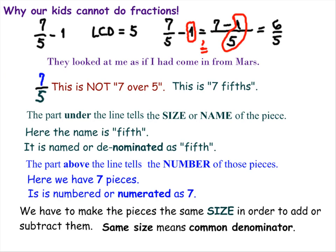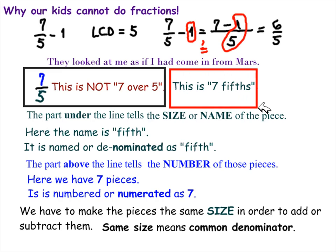The reason they don't get it is because we use the words 7 over 5 instead of the proper words, 7 fifths.